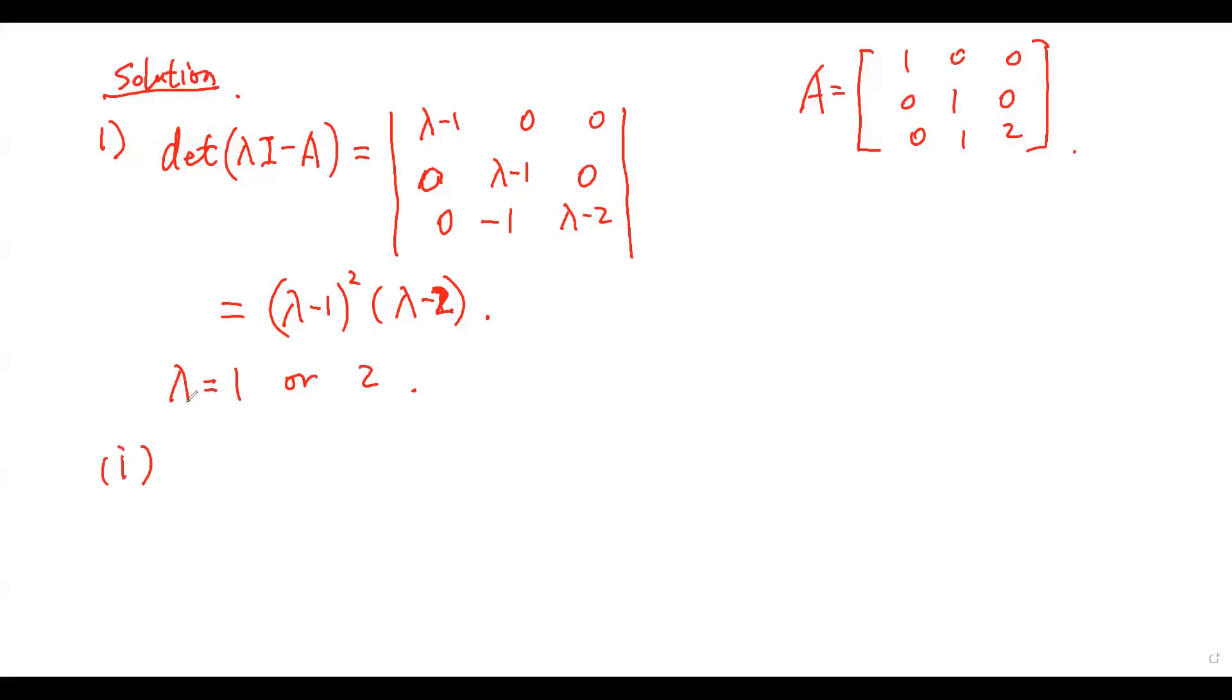First, we consider the eigenvalue equals 1. The eigenvalue equals 1 has multiplicity 2. Then, the matrix I minus A equals this one.